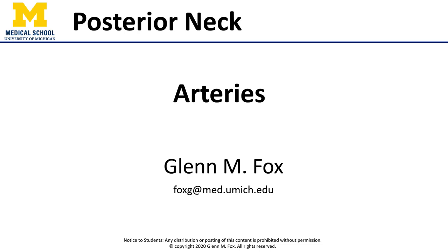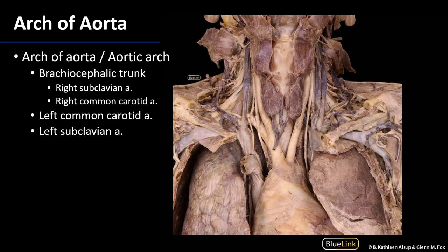Let's talk about the arteries of the posterior neck. Systemic circulation begins in the aorta, specifically the ascending aorta, which is exiting blood out of the left ventricle. That ascending aorta feeds into the arch of the aorta.